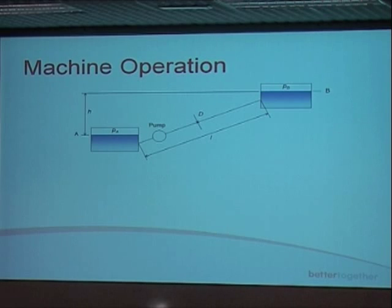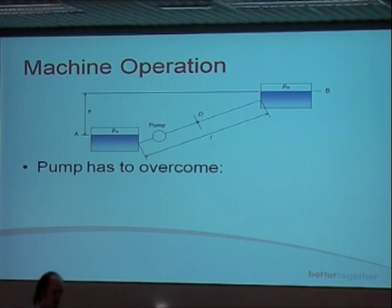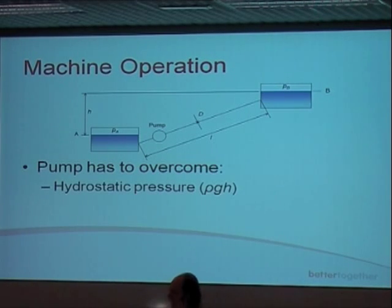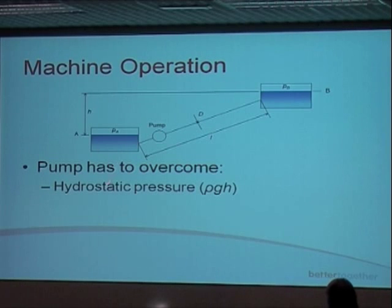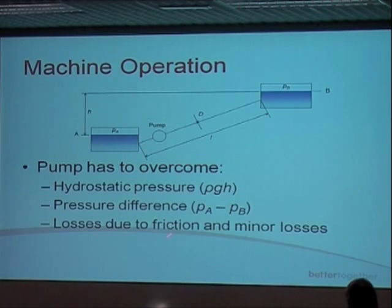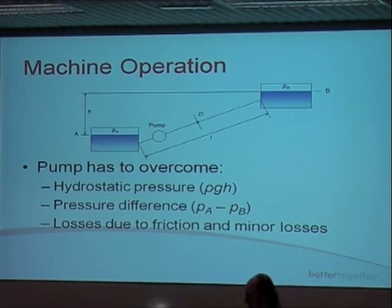From that, we can determine Bernoulli's equation. The pump has to overcome the hydrostatic pressure, which is obviously related to the height. It's got to overcome the pressure difference PA minus PB, and it also needs to overcome the losses due to friction and the minor losses in the pipe.